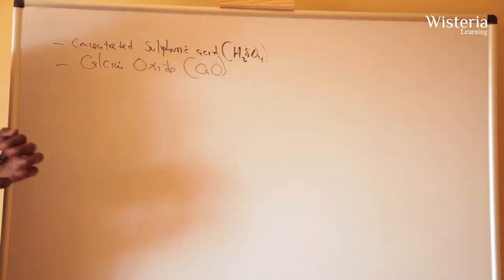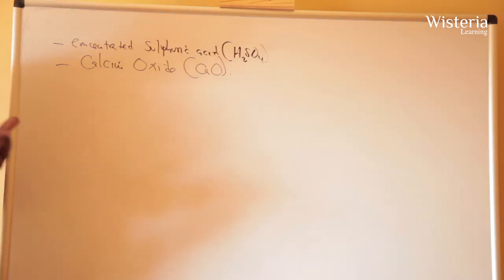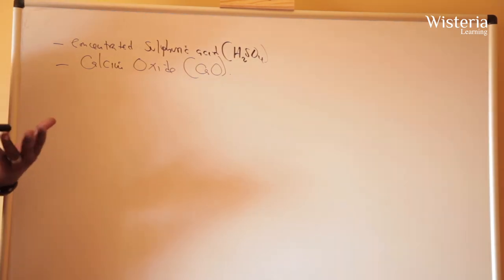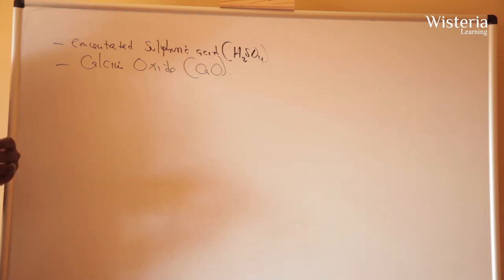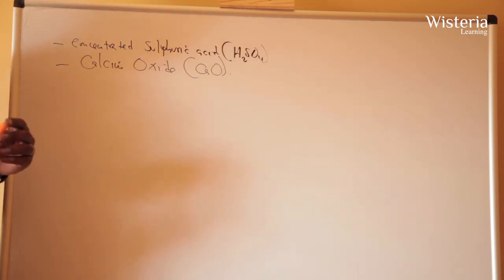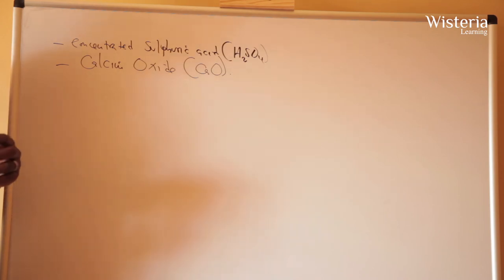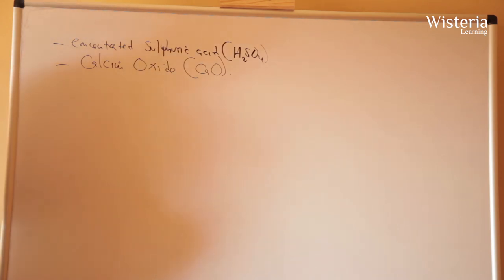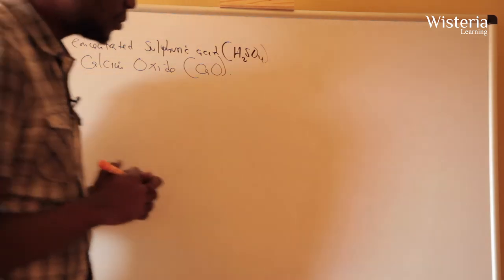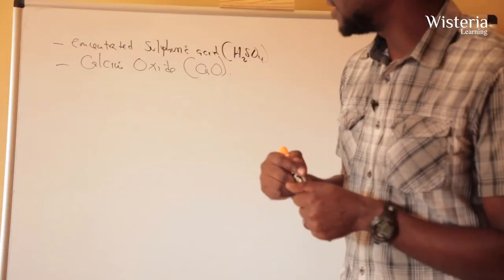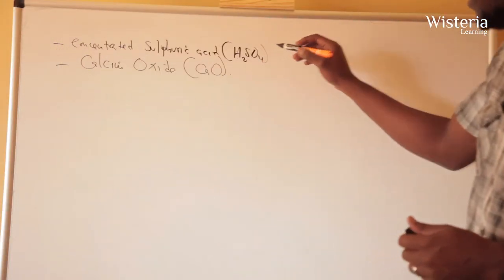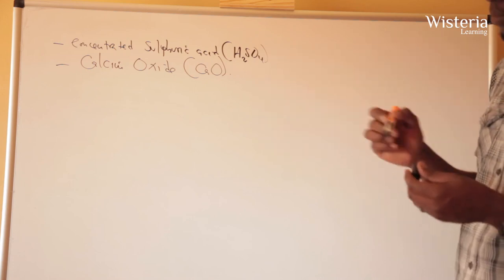Today we have looked at measurements, where we covered time, temperature, mass, and volume. We have learned the SI units used in chemistry, and we also know the methods we can use to collect gases, and how we are able to dry a gas using concentrated sulfuric acid and calcium oxide.